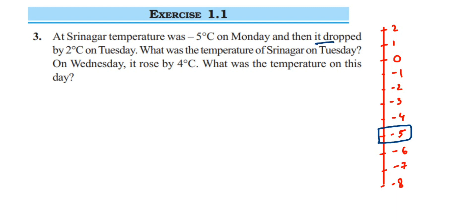It dropped by 2 degrees Celsius on Tuesday. Drop means the temperature decreased more, so it will go further down on the number line. Right now it is at minus 5, so moving down 2 units — 1 and 2 — the temperature on Tuesday will be minus 7 degrees Celsius. Drop means decreasing, so we subtract 2 degrees Celsius from minus 5.